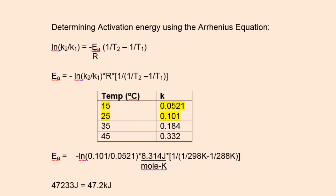Now we can pick any pair of temperature and rate constant values and substitute them into the equation. I picked the first two and came up with 47.2 kilojoules. We could also pick other pairs and determine that the activation energy is very close to 47.2.